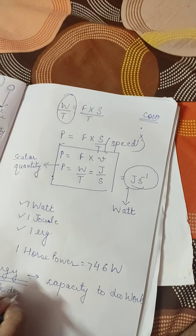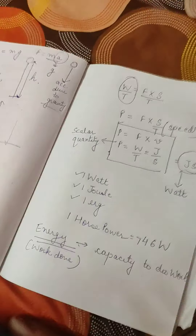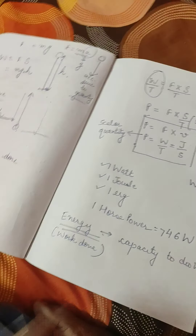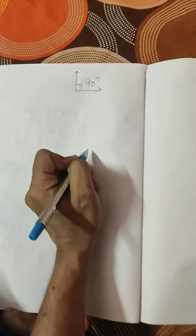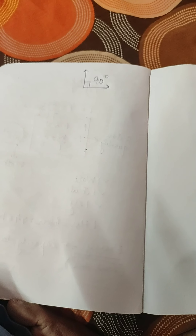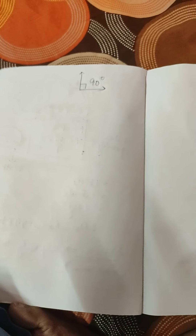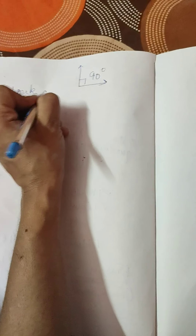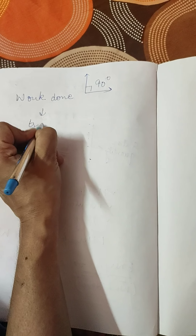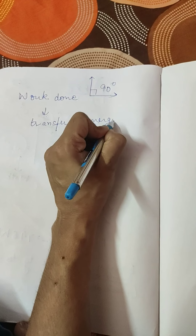They will ask you numericals about energy. If a question asks about energy, it means you have to find out the work done. Energy is actually work done. We know that energy is neither created nor destroyed. There is no transfer of energy if a body is acted upon by a force normal to the direction of its displacement — if force and displacement form a 90-degree angle, there is no work done and hence no transfer of energy.